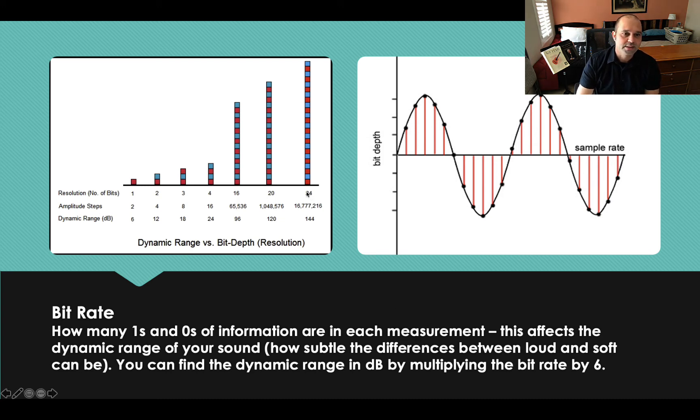What is the dynamic range of 24-bit? It is 24 times 6, 144 decibels. Remember that guy, that multiply by 6, that's really, really helpful. Is that it? I think that's all we've got.